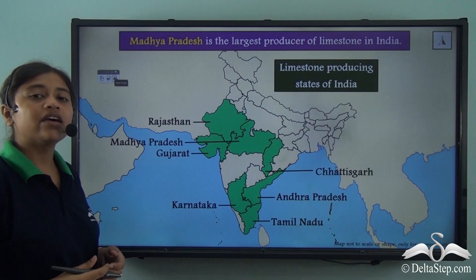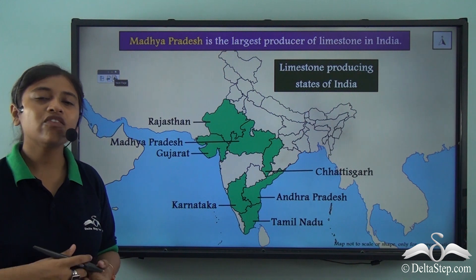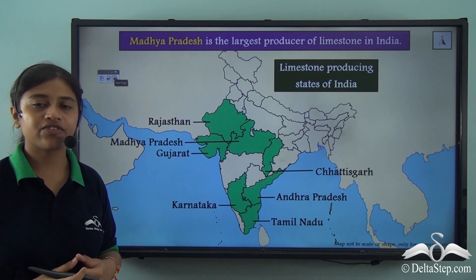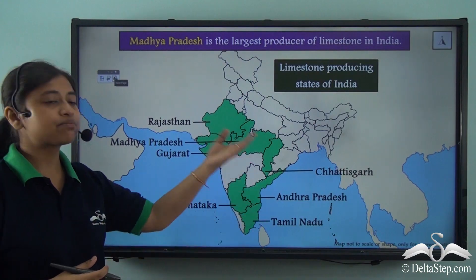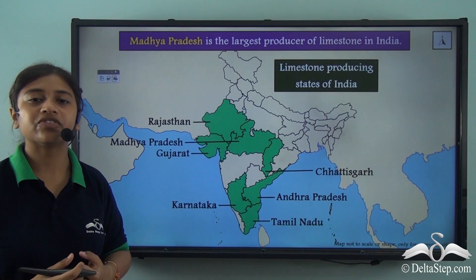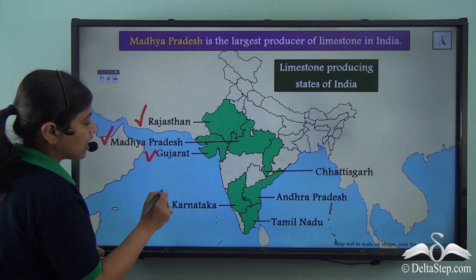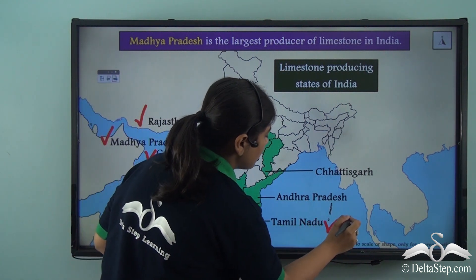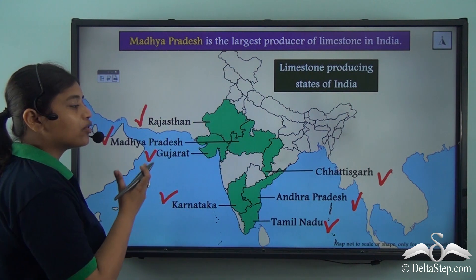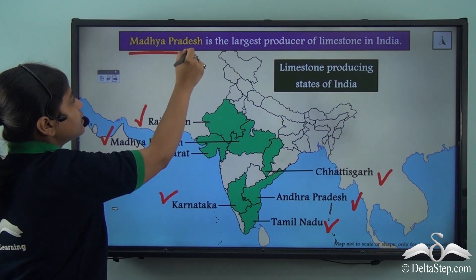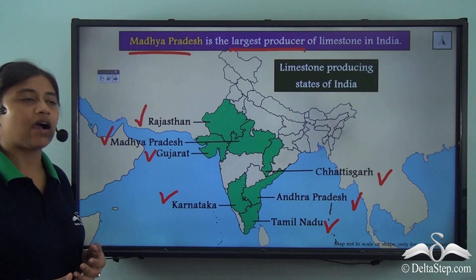Here is a map of India showing the distribution of limestone. The leading producers of this non-metallic mineral are Rajasthan, Madhya Pradesh, Gujarat, Karnataka, Tamil Nadu, Andhra Pradesh and Chhattisgarh. Out of these states, Madhya Pradesh is the largest producer of limestone in India.